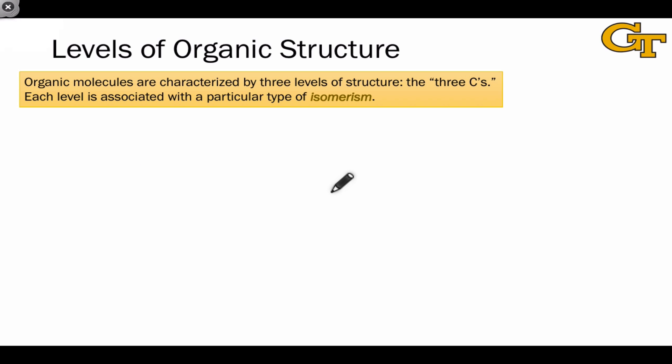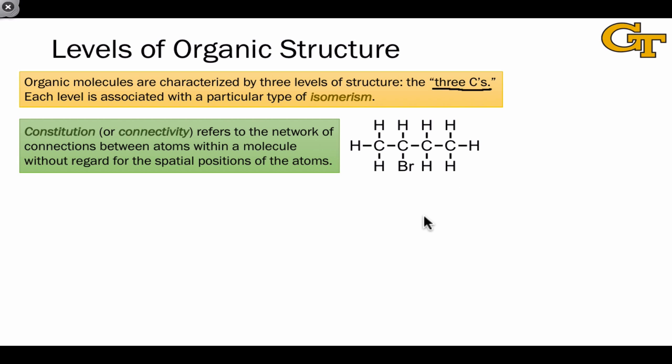Recall the levels of organic structure that we discussed in an earlier video, the three Cs. Each of these is associated with a type of isomerism. The top level is constitution or connectivity, how the atoms are connected. This is associated with constitutional isomerism.